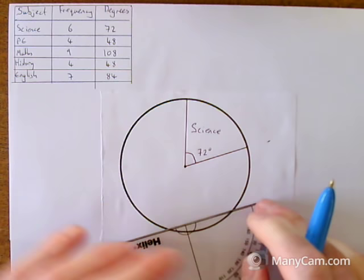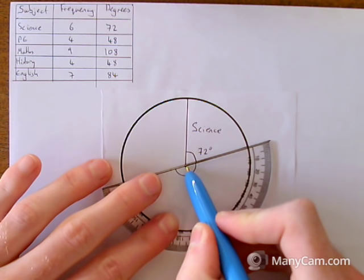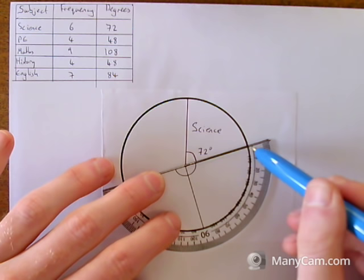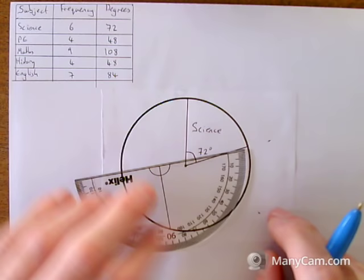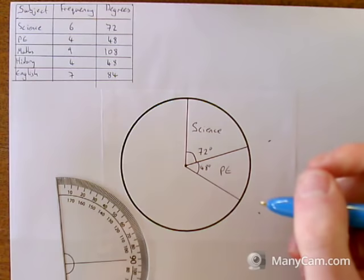Now the next one I need to draw is PE, which is 48. On the new line that I drew just then, I'm going to put my protractor on that line this time, making sure that the crosshair lines up with the dot, and that the line at the bottom lines up with my new line. And then this time, I'm going to use the outside scale again, come around to 48 and make a mark. And then I can join those up, and again label it as we're going along. That was 48 degrees.